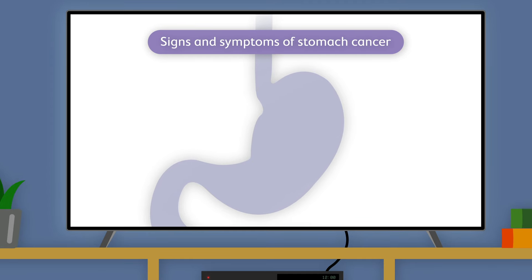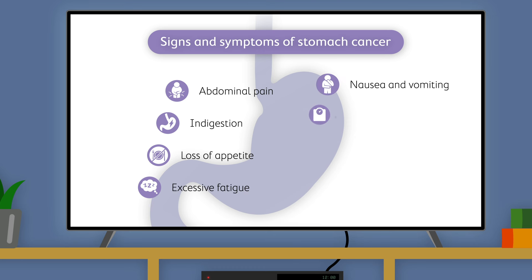The symptoms you should be looking out for are ongoing abdominal pain, discomfort or a burning sensation in the stomach, indigestion, reflux or heartburn, loss of appetite, excessive fatigue or weakness, nausea and vomiting, unexplained weight loss, low iron levels, black stools, blood and vomit.